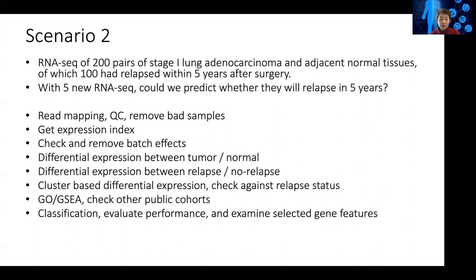Finally, you can run classification. This can be run directly on the tumor samples to look at the difference between relapse and non-relapse. Or you can run this on the differential genes — collect all genes that are differentially expressed between tumor and normal — and then run machine learning. Try all the different machine learning approaches, evaluate their performance with cross-validation, then examine the features, especially genes with high weight, to see whether they agree with your differential gene expression analysis. Then predict the new samples.